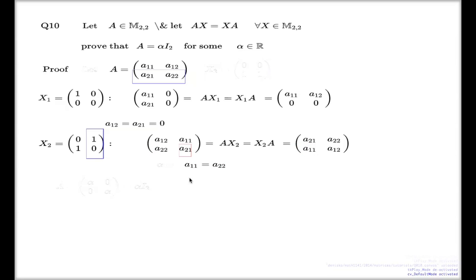If I give a name to this identical number, if I call it alpha, then my matrix A must be of this structure. Remember, we just proved that the off-diagonal vanish and diagonal elements are simply identical, alpha and alpha. This is simply the scalar multiple of the identity matrix. And that finishes the proof of question 10.